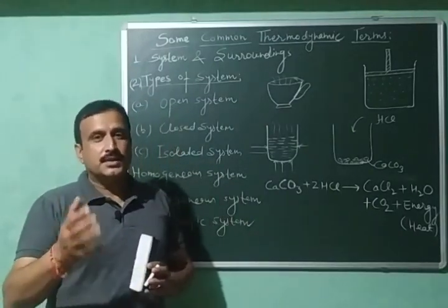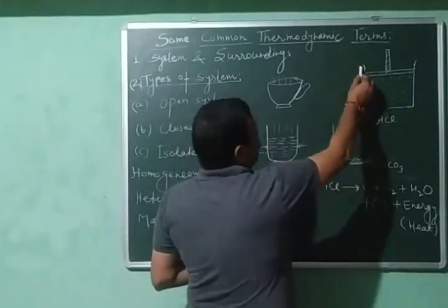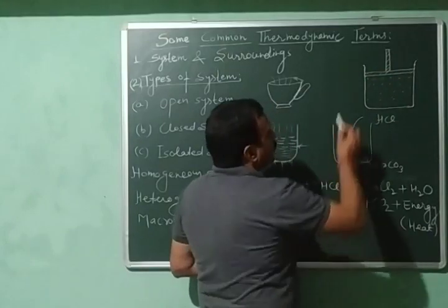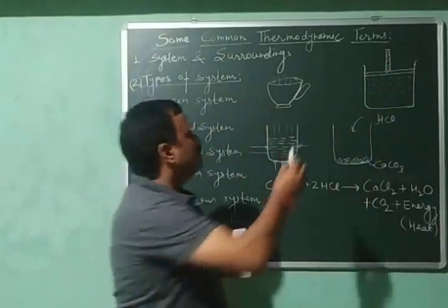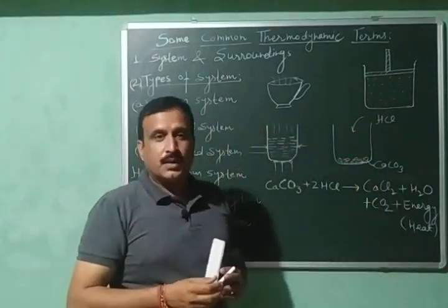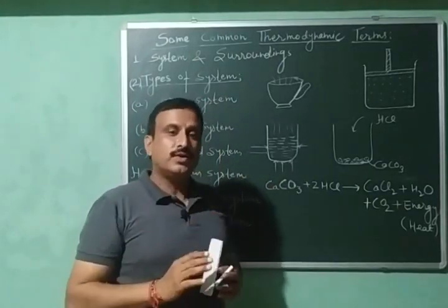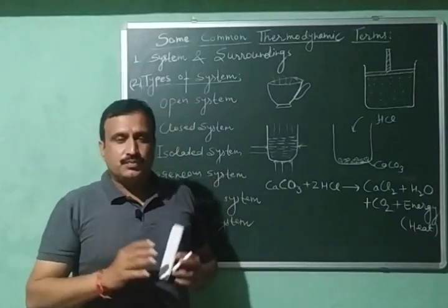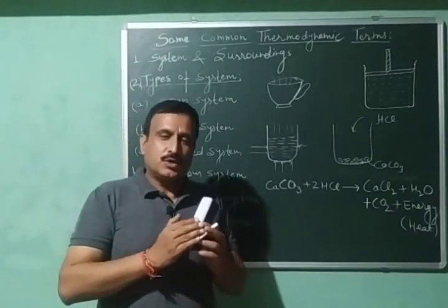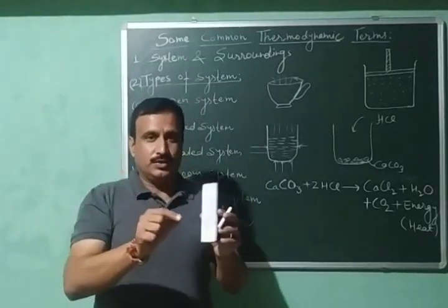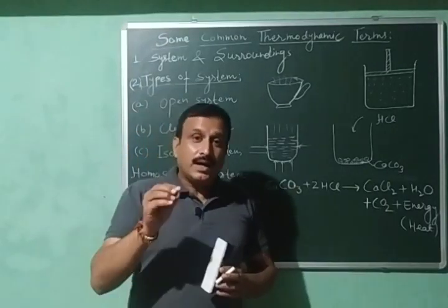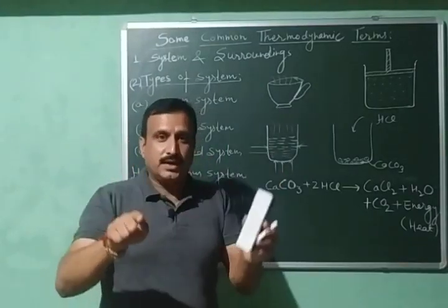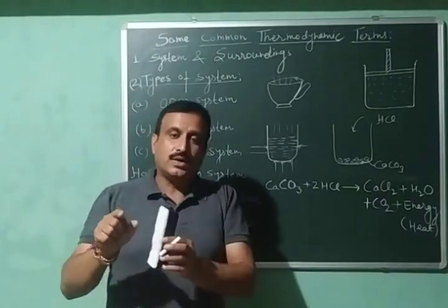Let us understand boundaries with an example. If I have a gas enclosed inside a container fitted with a piston, then the walls of the container and the piston serve as a real boundary — because we can see it, touch it, and feel it. But boundaries can also be imaginary. Suppose I want to study the temperature, atmospheric pressure, or climate of a particular region on Earth — then I have to imagine the boundaries of that area, because otherwise there are no physical boundaries.